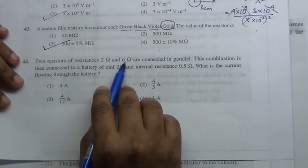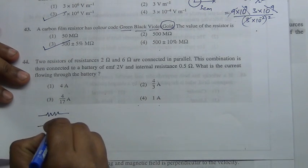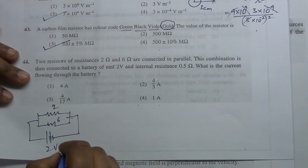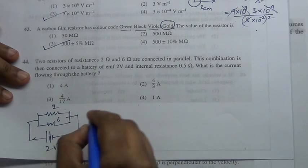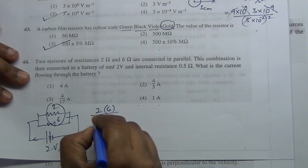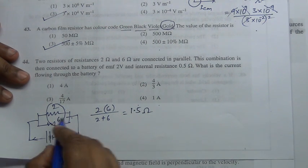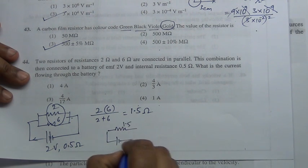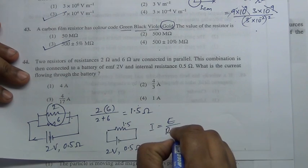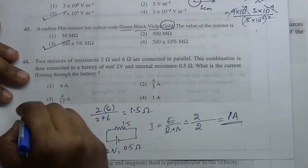Two resistors of 2 Ω and 6 Ω are connected in parallel, then connected to a battery of 2 V with internal resistance 0.5 Ω. For total current, we need the effective parallel resistance: (2×6)/(2+6) = 12/8 = 1.5 Ω. Total resistance is 1.5 + 0.5 = 2 Ω. Total current = EMF / (R + r) = 2/2 = 1 ampere.